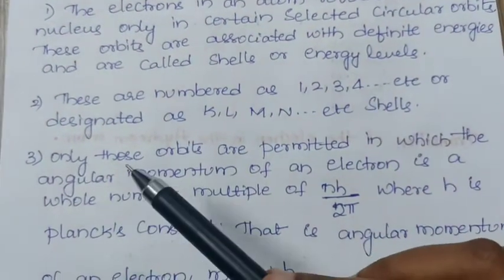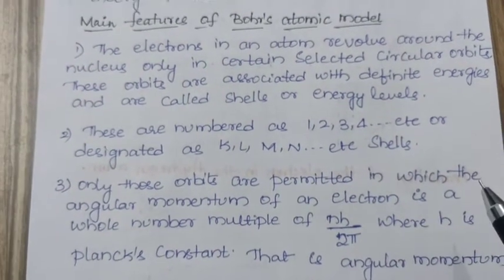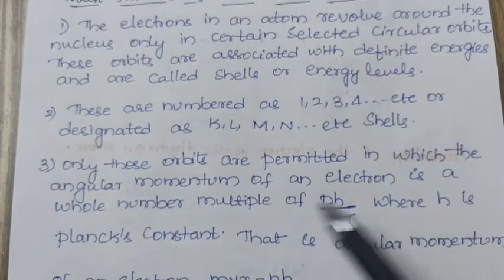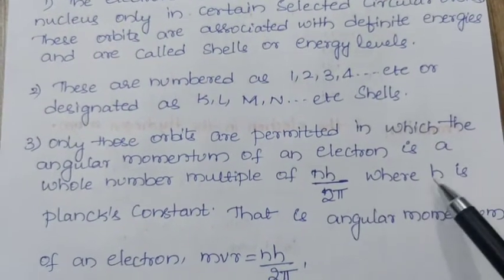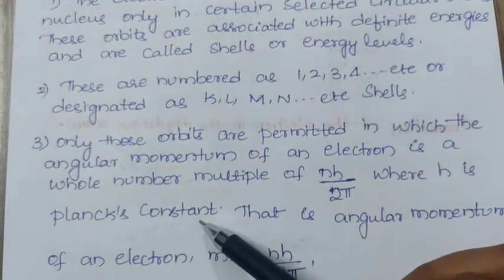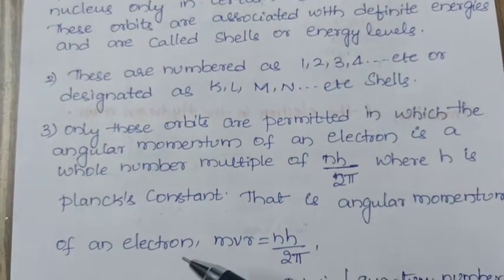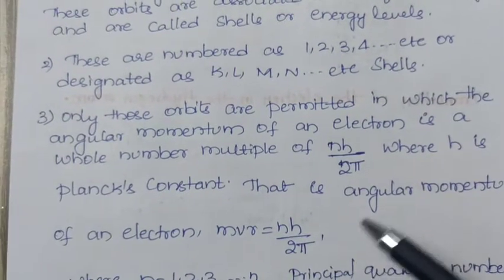Third point is, only those orbits are permitted in which the angular momentum of an electron is a whole number multiple of NH by 2 pi, where H is the Planck's constant. That is, angular momentum of an electron is equal to NH by 2 pi.